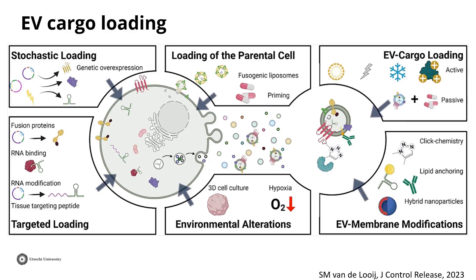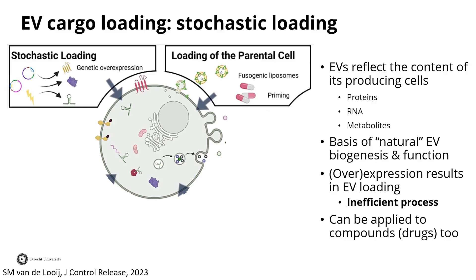I wanted to start with cargo loading of EVs, especially what we often refer to as passive loading. EVs reflect the content of the cells that produce them. You can't have proteins or messenger RNA inside your EVs or in the membrane if they're not expressed in the producing cell. Part of the components will be enriched, but part of them stochastically end up in your EVs — this is due to their natural biogenesis. As a result, overexpressing molecules or proteins will result in enrichment and loading of your cargo into EVs. It is not very efficient, but it does work, and is often applied for RNA.